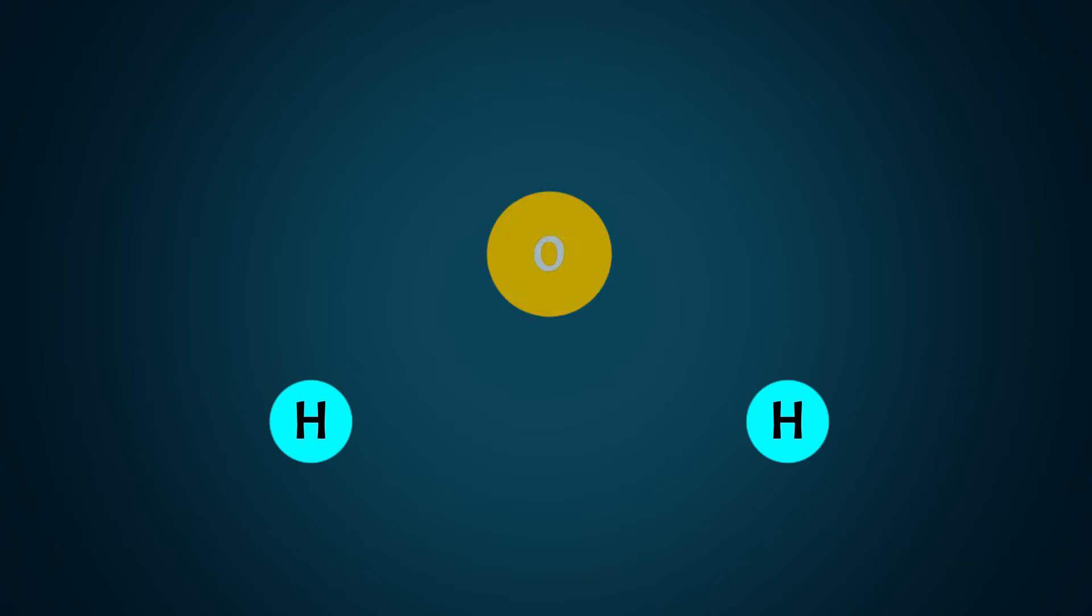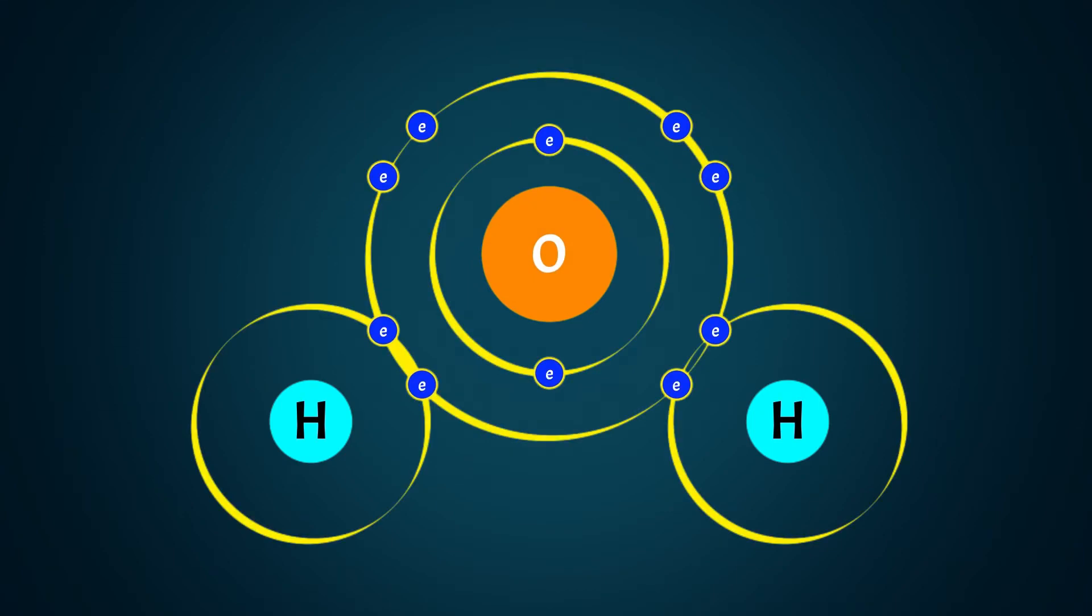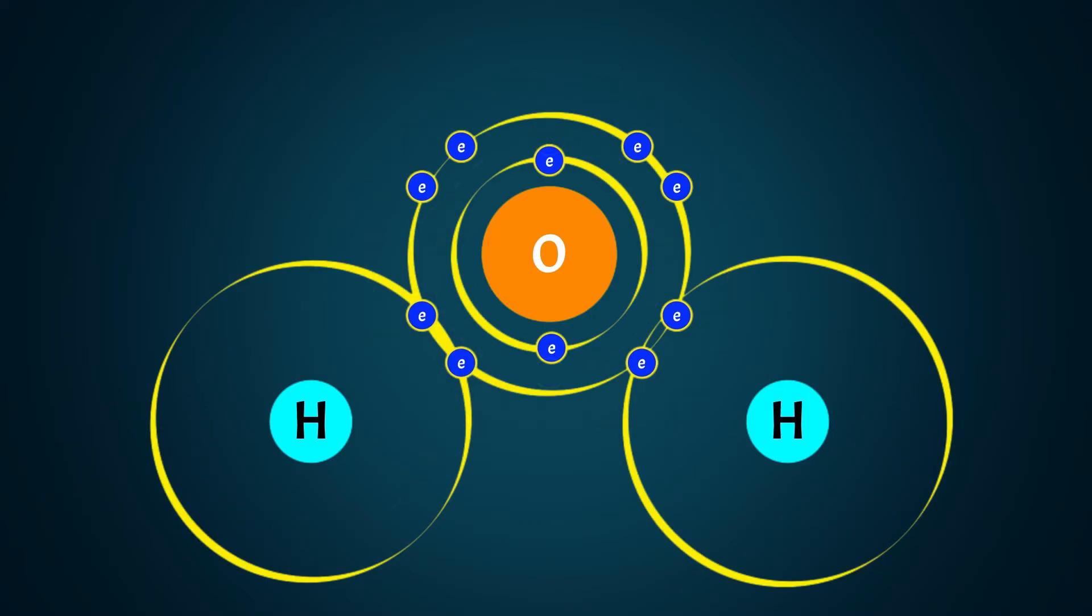A water molecule contains two hydrogen atoms and one oxygen atom, covalently bonded together, meaning they share electrons. Oxygen atoms have a larger nucleus with positive protons and tend to attract negative electrons toward them more than hydrogen. The result is that part of the water molecule is slightly negative, meaning the other parts are relatively more positive.